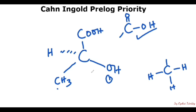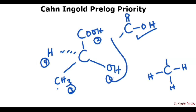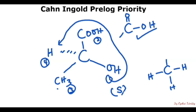So our priority 2 will be COOH, then 3 will be CH3, and 4 will be hydrogen. When we draw out the arrow, it goes from 1 to 2 down to 3, and that's counterclockwise — which is S configuration.